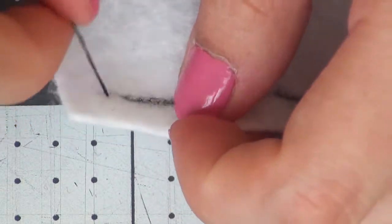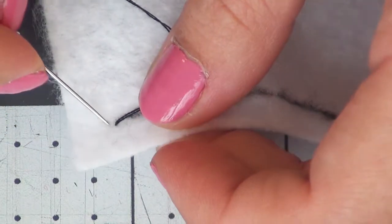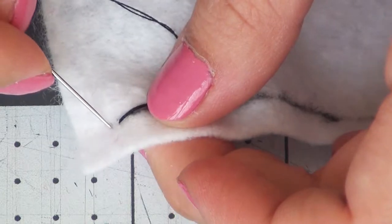For the first stitch you're going to go down through your fabric very close to your thread. This is to help get started.